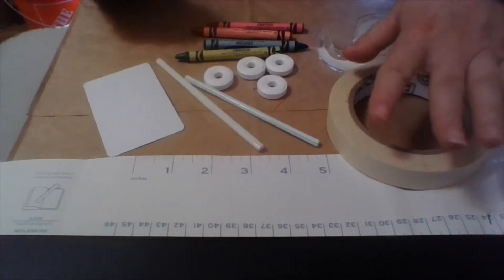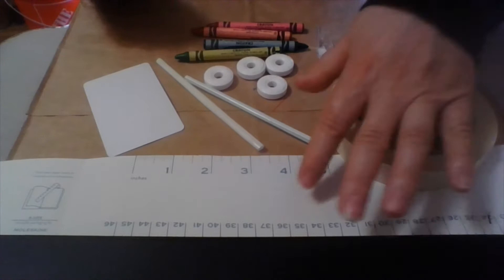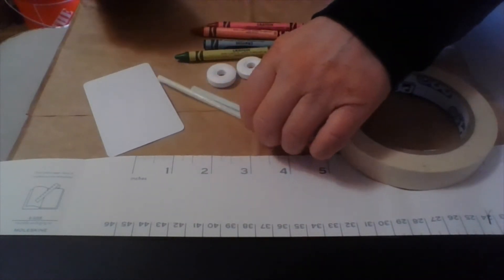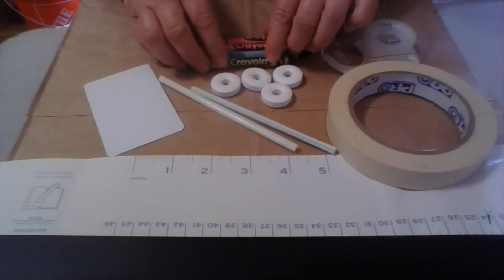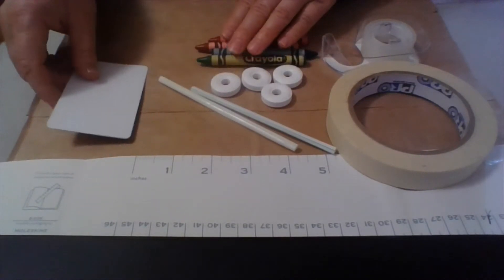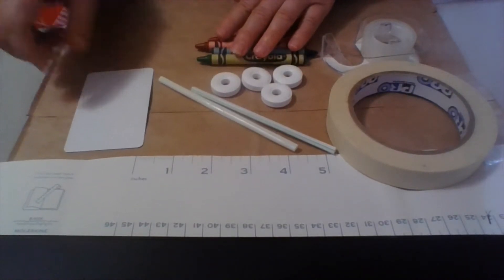What you'll need is some masking tape, a ruler, two straws, four lifesavers, some crayons, and a card and some scissors.